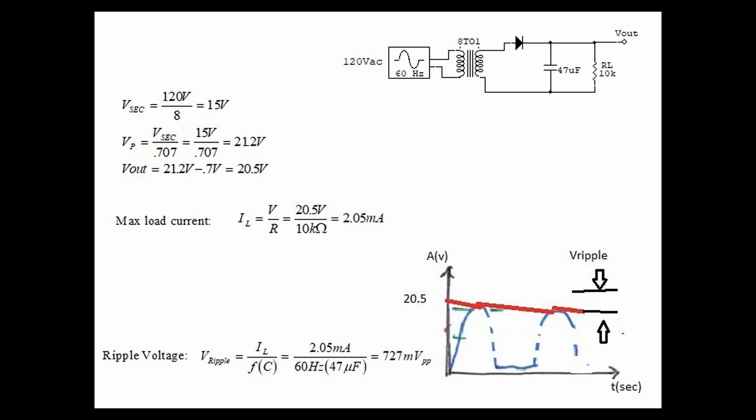Let's return to a very simple half-wave rectifier circuit with only one diode, but this time we will insert a capacitor. We follow the same procedure using the transformer formula to come up with peak voltage and then subtract one diode drop, so the voltage delivered to the load, V_out, is actually 20.5 volts.